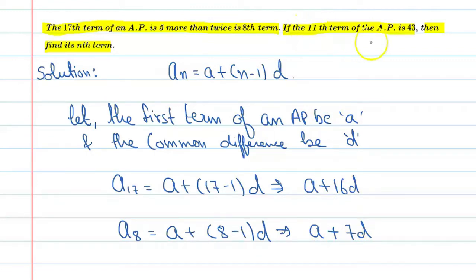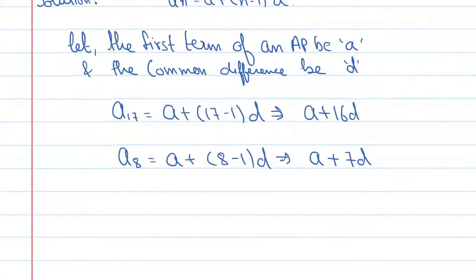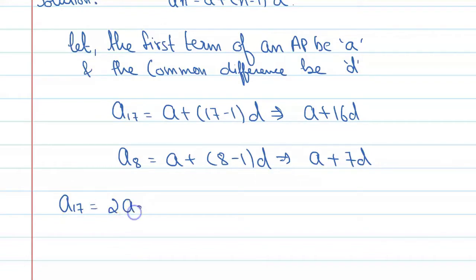Now it was also given that 11th term of an AP is 43. Before that, first of all we will write this condition according to this form. So we can say here that A17 is equal to double of A8 plus 5.